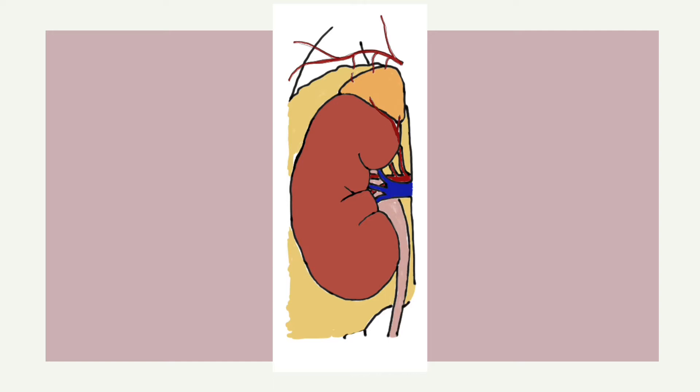Adrenal glands, also known as suprarenal glands, are small triangular shaped glands located on top of both kidneys.